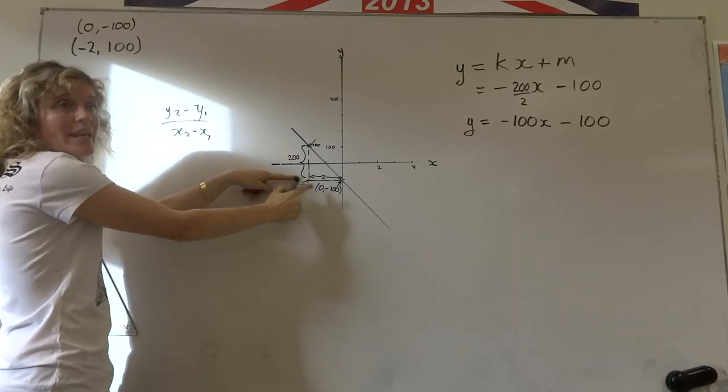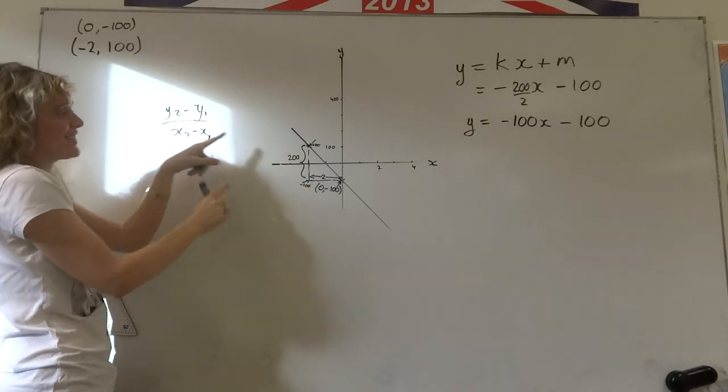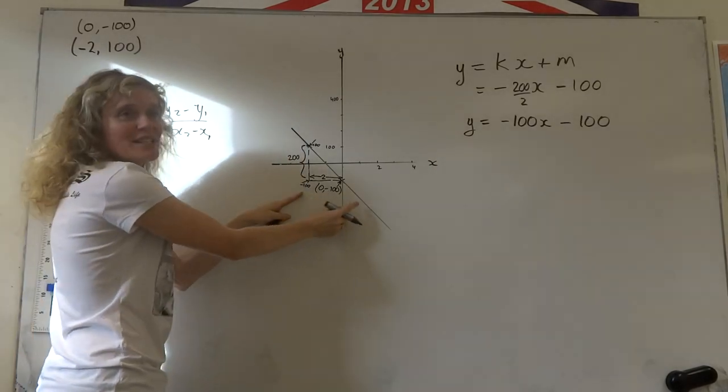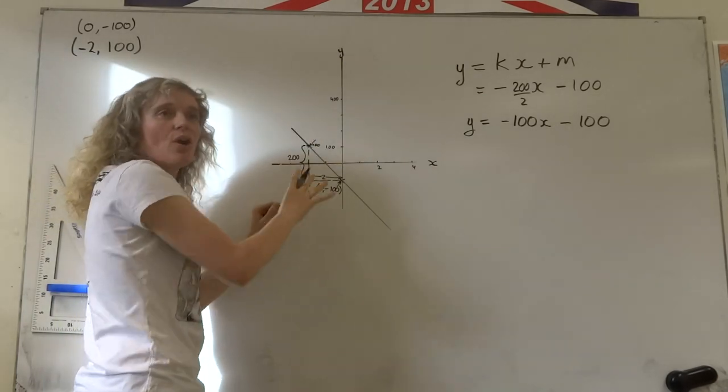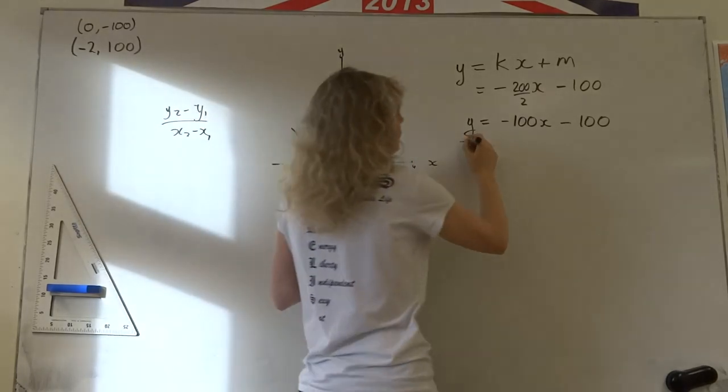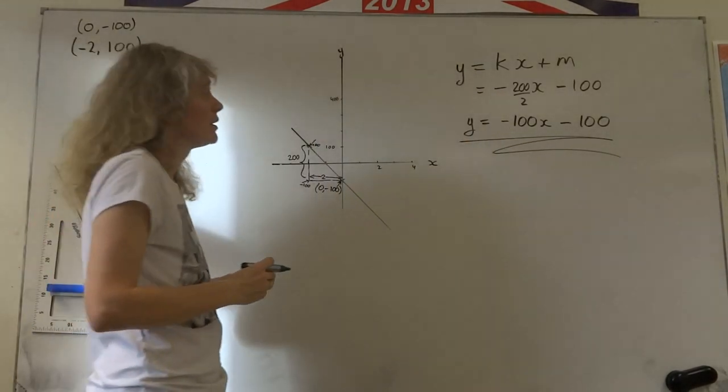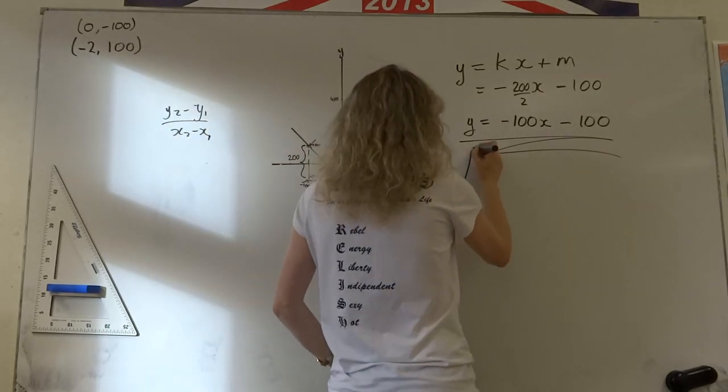Without having to use y2 minus y1 over x2 minus x1, that's actually the same thing here as you're doing there. You're taking the difference in the y-axis, y2 minus y1, divided by the difference in the x-axis, x2 over x1. But sometimes it's easier just to put it on your sketch, and this is the equation of your line.